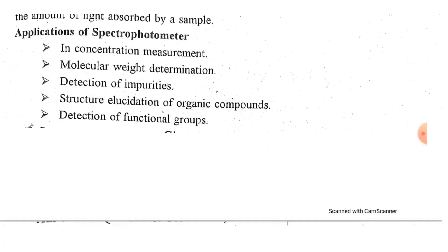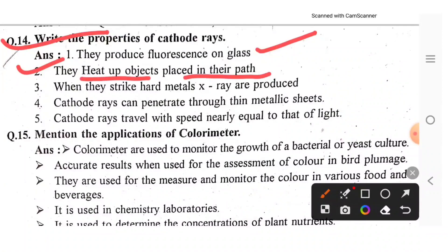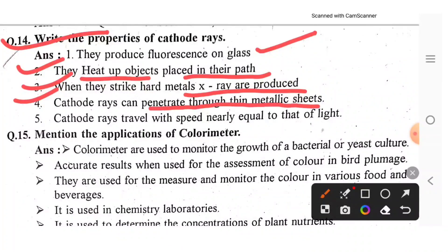Next are the properties of cathode rays. They produce fluorescence on glass. They heat up objects placed in their path. When they strike hard metal, X-rays are produced. Cathode rays can penetrate through thin metallic sheets. They travel at a speed nearly equal to that of light.